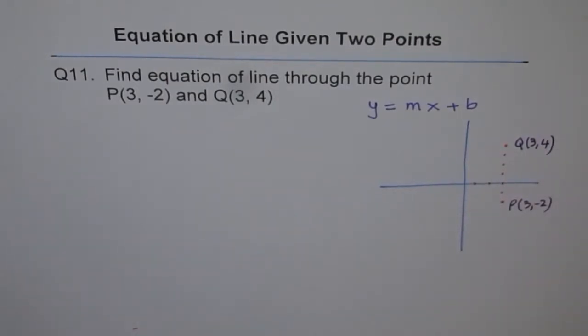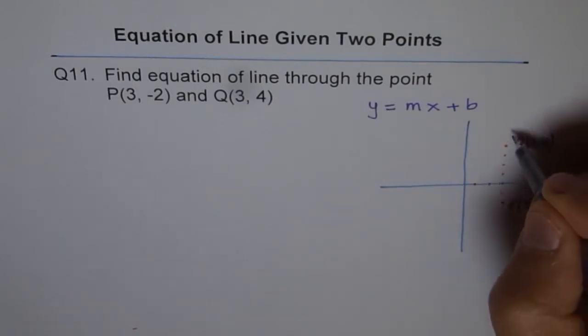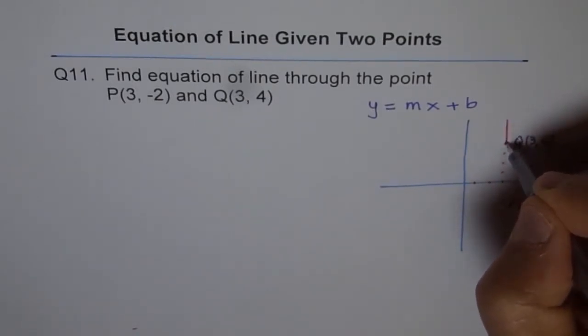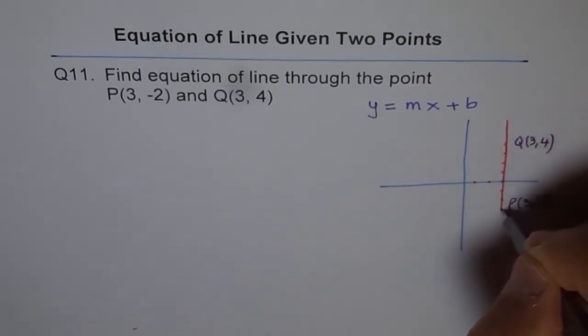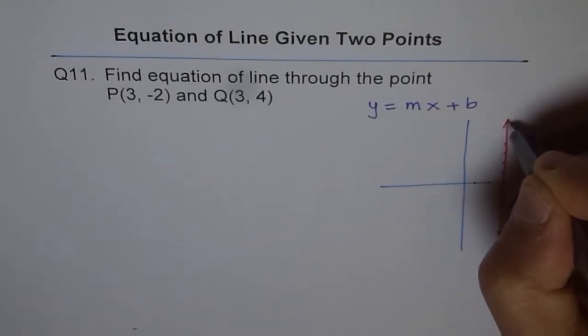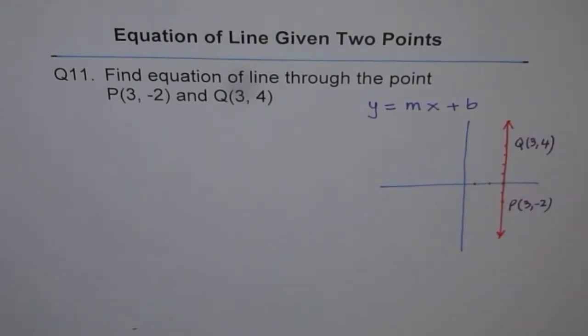So if we join them, we get a vertical line, correct? So they are perfectly vertical. 3 and 3 is matching. So X value is 3. Y value changes from minus 2 to 4. So when you draw it, it becomes a vertical line, something like this. Now that's our line which goes through point P and Q. And we need to find equation of this line.